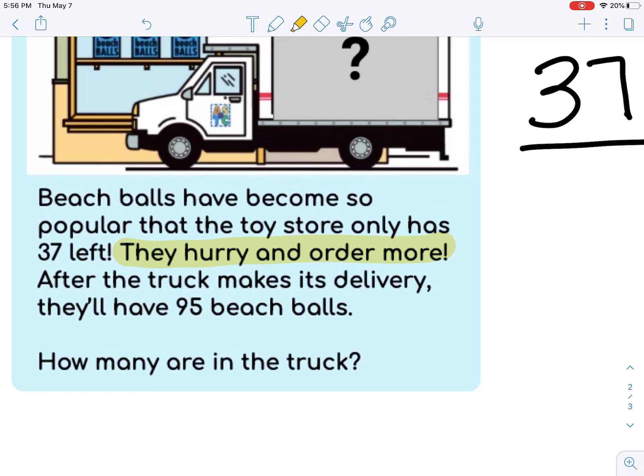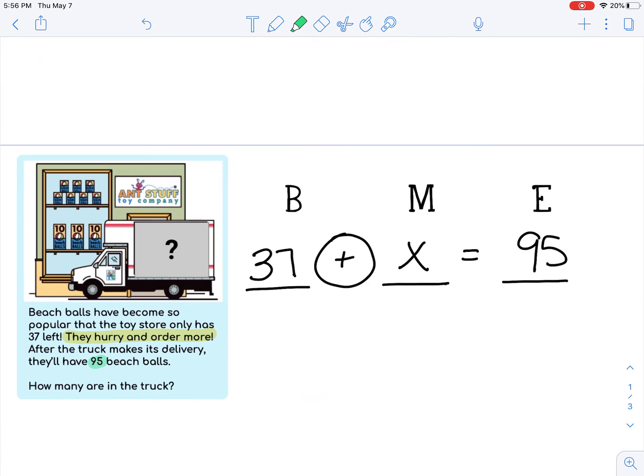So it sounds like at the end of all this, after they order more, then they will have 95. So again, really picturing it in your mind, thinking about what happens first, what happens in the middle, and then what happens last helps you put the numbers where they need to go.